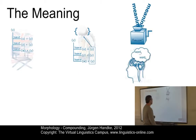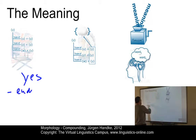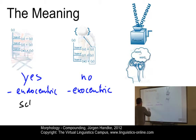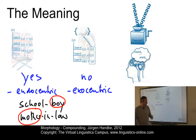What about the meaning of compounds? In classifying compounds concerning their meaning, the central question is: does the grammatical head — 'boy' in 'schoolboy', 'mother' in 'mother-in-law' — define the meaning or not? If yes, we have a so-called endocentric compound. If no, we have a so-called exocentric compound. Endocentric compounds would be something like 'schoolboy' or 'mother-in-law', where the heads 'boy' and 'mother' determine the meaning.